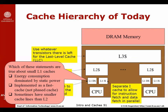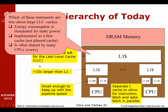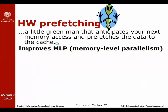So which statements are true about L1 caches? Energy consumption is dominated by static power — no, actually dynamic power dominates. They are often implemented as fast caches — yes. And sometimes they have smaller cache lines than L2. For large last-level caches, energy consumption is dominated by static power — yes. They are implemented as phased caches — yes. And the cache is often shared by many CPUs or cores — yes.